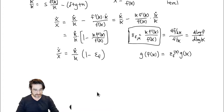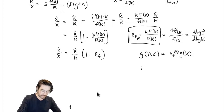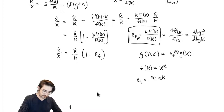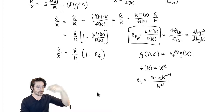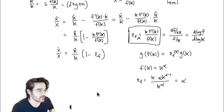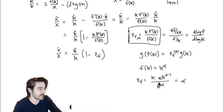For a power function like Cobb-Douglas where F of K equals K to the alpha, the elasticity is simple: epsilon F equals K times alpha times K to the (alpha - 1), divided by K to the alpha. The top just turns back into K to the alpha, which cancels perfectly with the bottom. Hence it's just alpha. So for a power function, the elasticity picks off that exponent exactly.